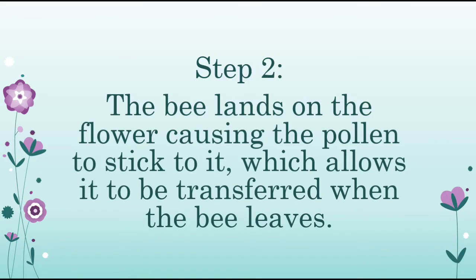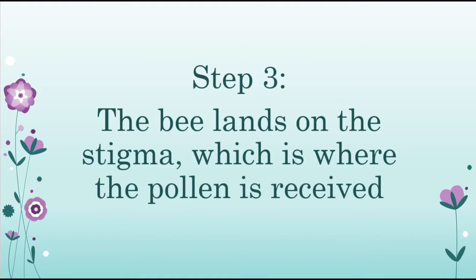What is something that is always around flowers? Bees! Bees help transfer the pollen because when they land on the flower, the pollen sticks to the fuzz on the bee's body and legs. So step number two, a bee comes along and lands on a flower causing the pollen to stick to it, which allows the pollen to be transferred whenever the bee leaves. And step number three, the bee that's carrying the pollen then lands on the stigma — the area where the pollen is received — of another flower, and the process of pollination is complete. So after the stigma receives the pollen, it's able to use it to help the pistil create its seeds, which is important for creating more flowers.